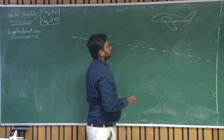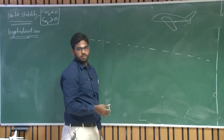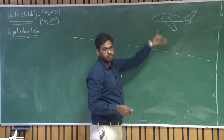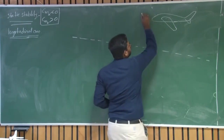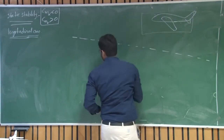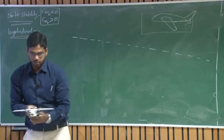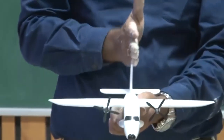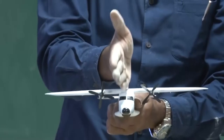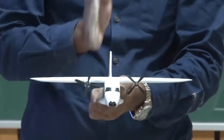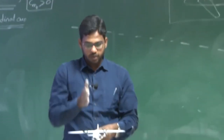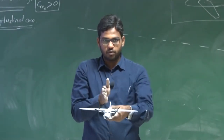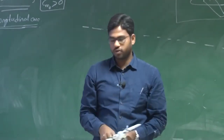The longitudinal case is the motion in the vertical plane. That means it can translate front and back, go up and down — it can perform a loop in this plane. We have a plane of symmetry for this aircraft. If you take a vertical plane cutting this aircraft exactly at the center line, the motion along this plane of symmetry is the longitudinal motion. So in this vertical plane it can do pitch up, pitch down — that means a rotation — go front and back, and move up and down.